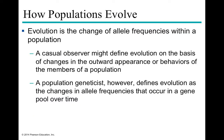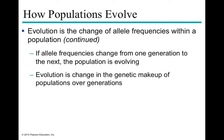Pay attention to whether a question is asking about allelic frequency or phenotypic frequency on the exam. Evolution in a population is the change in allelic frequencies from one generation to the next. As a population geneticist, we are strictly talking about allelic frequencies — the change in allelic frequencies occurring in any given population over a particular period of time. If allelic frequencies change from one generation to the next, the population is evolving; if they do not change, the population is said to be in equilibrium.